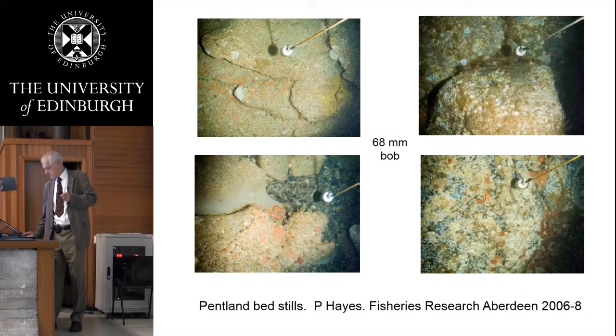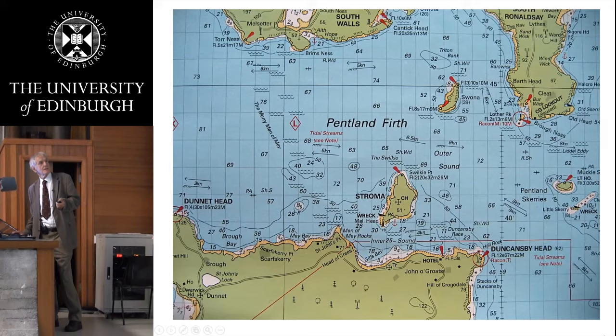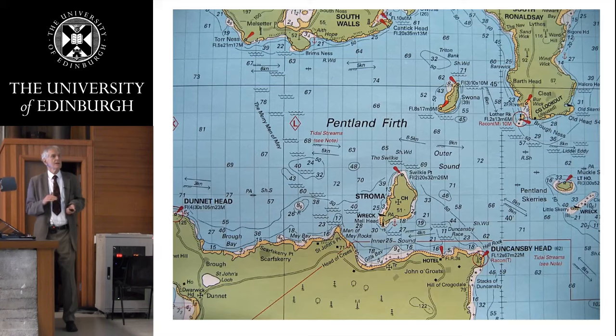We can also look at a map of the Pentland Firth, and it's not really very much like a Venturi tube when you look at the shapes. You've got islands here — Swona and Stroma — headlands jutting in, places where there's a sudden drop down to 100 metres depth, and places where it suddenly goes up to about 30 metres; the average is about 70. That really doesn't look like a nice flow passage.